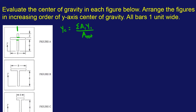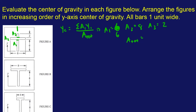Let's jump in. We're going to call the rectangles A1, A2, and A3. A1 is simply the area: we're told the width of these bars is one unit, so A1 is 1 times 6, which is 6. A2 is 8 times 1, which is 8. A3 is 1 times 2, which is 2. The total area is 6 plus 8 plus 2, which is 16.